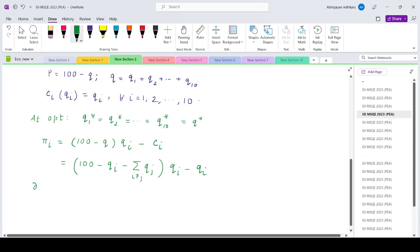Now the firm will choose the level of output that maximizes profit, so del pi i by del qi equals 0. So 100 minus qi minus summation i not equals to j qj minus qi minus 1 equals 0.